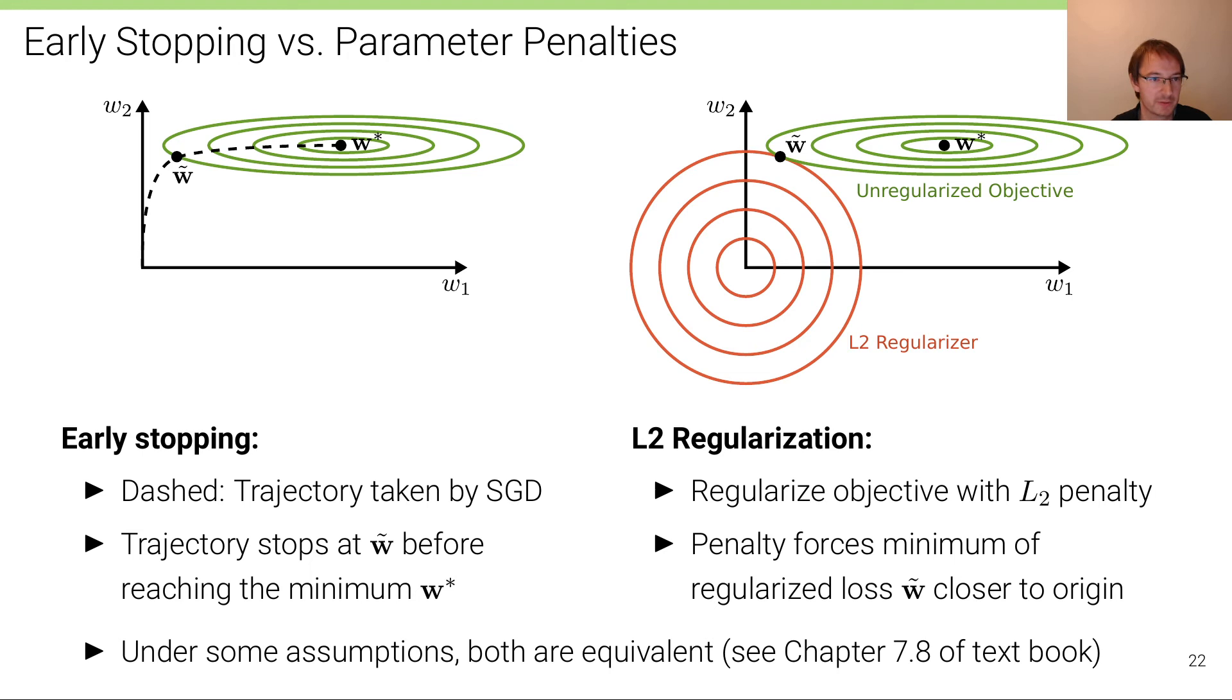In this case, there's only one objective which is an unregularized objective. Of course, you can also combine this strategy with a regularization strategy, but in this case it's the unregularized objective. Now the trajectory stops in this case at w-tilde before actually reaching the minimum w-star, because this is the point where the training error becomes very small, but this is the point where we have determined that the validation error starts increasing again. So we effectively stop here.